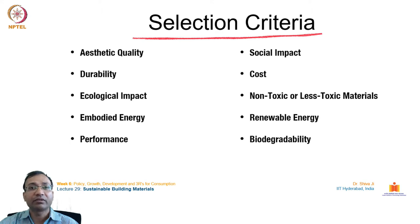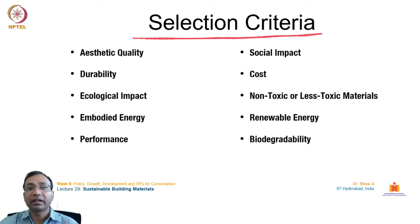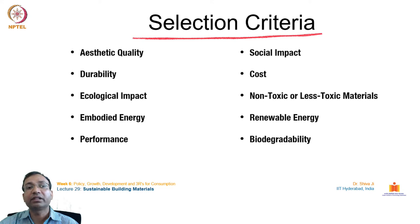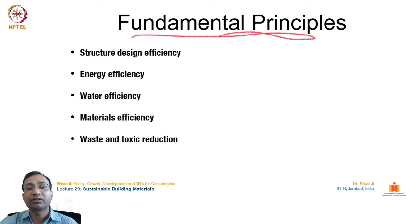The selection criteria include aesthetic quality, but beyond that we are looking at durability, ecological impact, embodied energy, performance, social impact, cost, non-toxic or less toxic material, renewable energy use, and biodegradability. These criteria have become very important and crucial in sustainability studies, and we will discuss them from the perspective of materials.